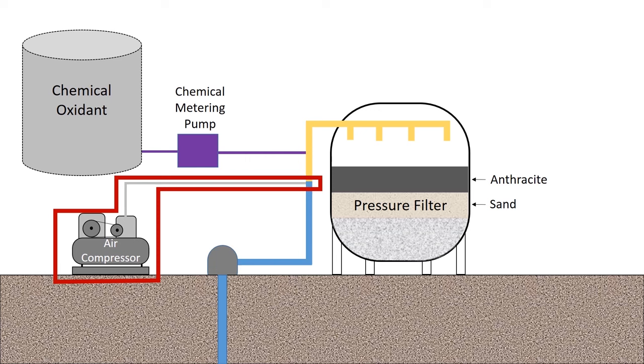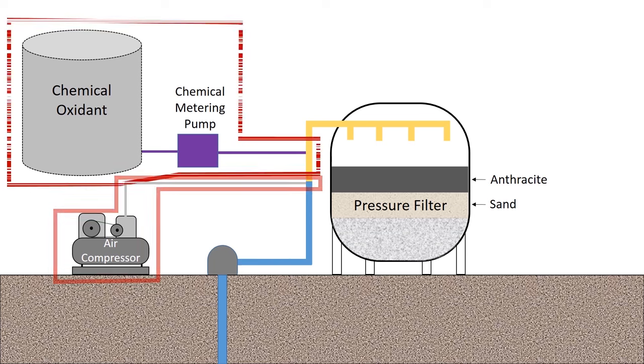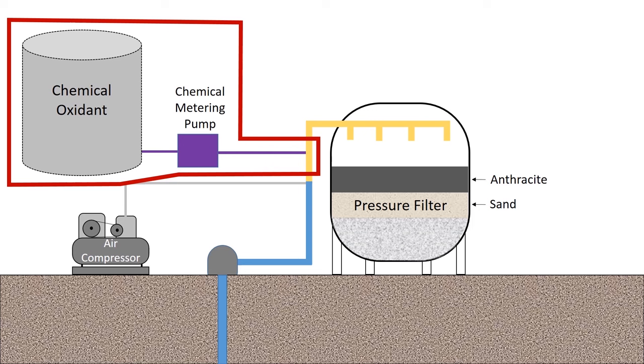Manganese typically requires chemical oxidation. So here we have our chemical oxidant. It could be chlorine, it could be potassium permanganate, it could be ozone, but at any rate, some chemical is used to oxidize the iron and the manganese that's in solution. And here we'll just pretend that it's potassium permanganate, since our feed line and our feed pump is purple.